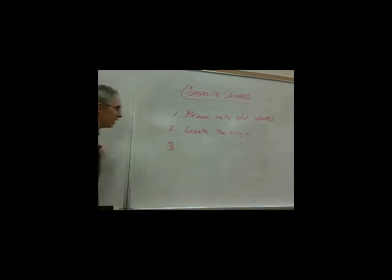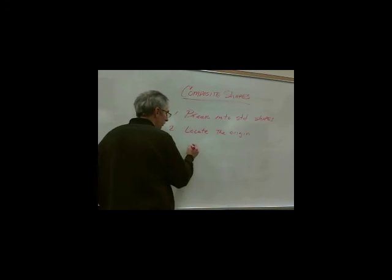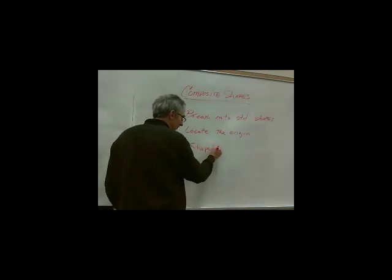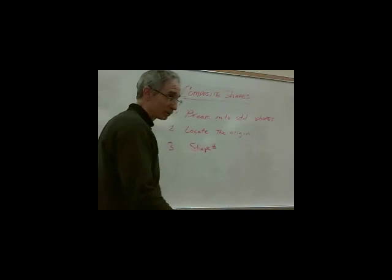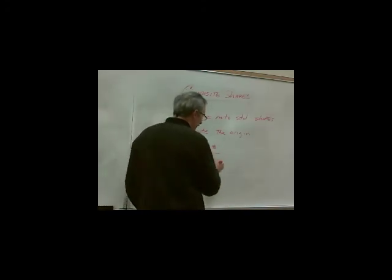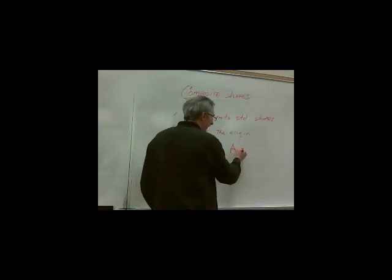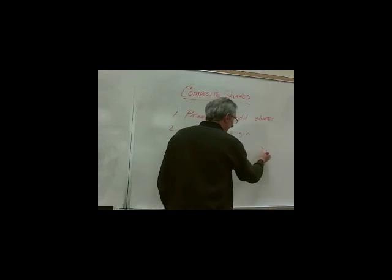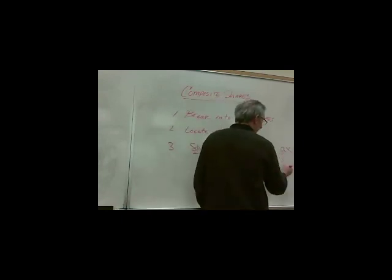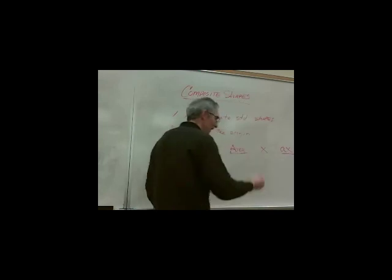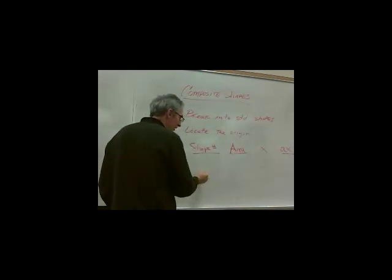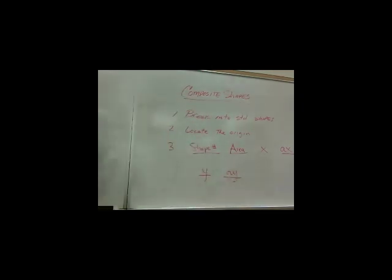You know, now in a homework problem, typically, homework problems are going to say, hey, here's the origin. If you're dealing with a problem and it doesn't say, here's the origin, you've got to pick an origin. Okay? Usually, you'd probably pick like a corner would be a good place. But you've got to know where the origin is. The third thing that you're going to do is I usually construct a table. Okay? And my table might say, like, shape number. I like, you know, I might call the rectangle shape number one or whatever. Shape number, area, x. When I say, ax, and then I'm going to loop this around, you know, I'd have a column called y, and I'd have another column called ay.